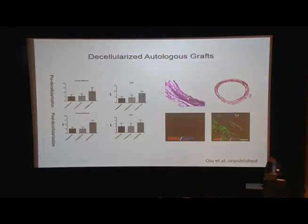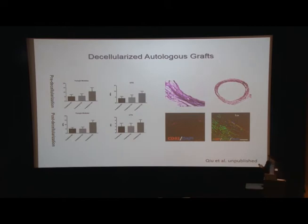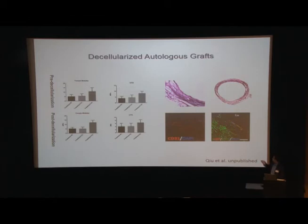In addition to polymer grafts, we also tried a decellularized matrix approach. We showed sufficient mechanical strength from decellularized fibrotic tissue by implanting a mandrel under the skin of animals, allowing fibrotic tissue to form within a couple of weeks. After decellularization and surface modification, we can achieve endothelialization and complete remodeling of the vascular wall.